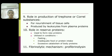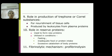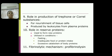Plasma proteins produce trophic or trophon substances important for the nourishment of tissue cells, produced by leukocytes from plasma proteins. They also act as reserve proteins — in conditions like fasting, inadequate protein intake, disease, or increased catabolism, plasma proteins are used for the formation of new proteins.